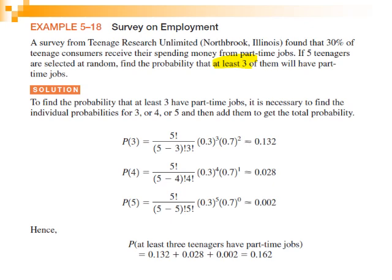We know it is a binomial case because the survey divides into two outcomes — success and failure: teenagers who have part-time jobs and those who do not have part-time jobs. The number of successes X is at least three.